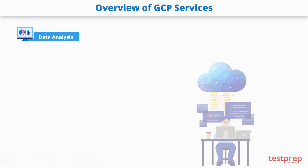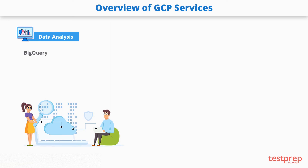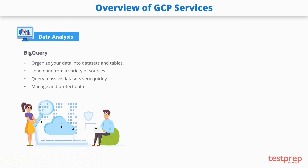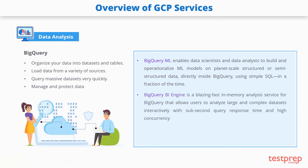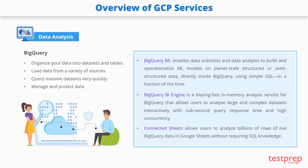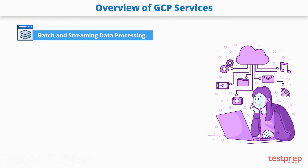Now let's look at Google Cloud's commonly used big data and machine learning services. For data analysis, Google Cloud has BigQuery — an enterprise data warehouse providing data analysis services. With BigQuery you can organize data into datasets and tables, load data from a variety of sources including streaming data, and manage and protect it using permissions. BigQuery ML enables data scientists and analysts to build and operationalize ML models on planet-scale structured or semi-structured data directly inside BigQuery using simple SQL. BigQuery BI Engine provides a blazing-fast in-memory analysis service allowing users to analyze large, complex datasets interactively with sub-second query response times and high concurrency. With Connected Sheets, users can analyze billions of rows of live BigQuery data in Google Sheets without requiring SQL knowledge.